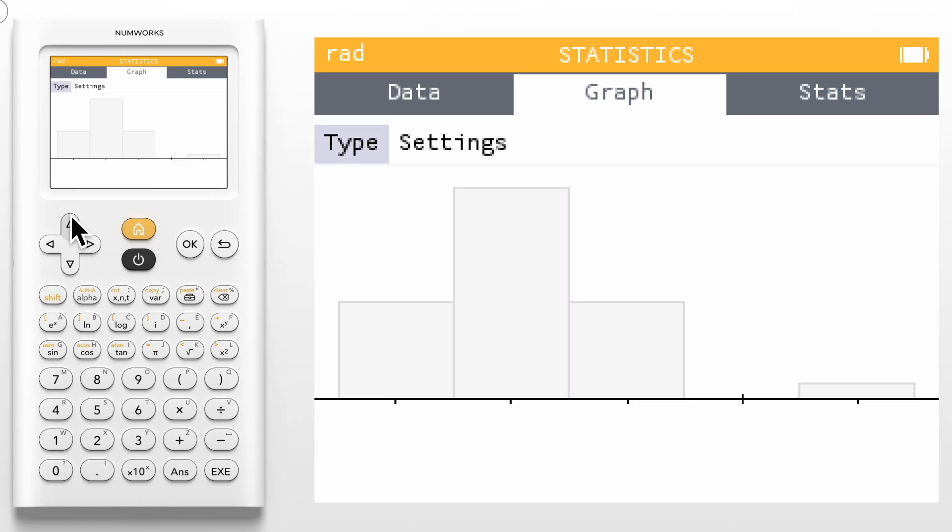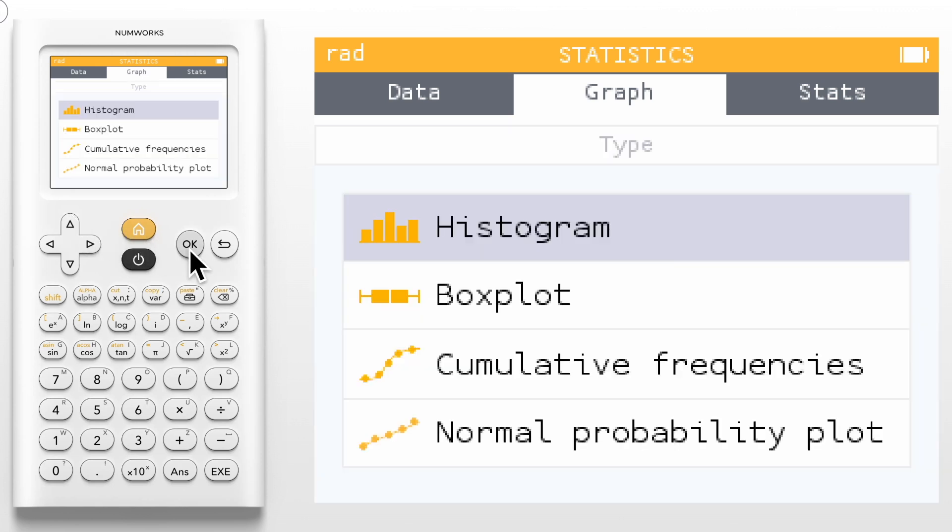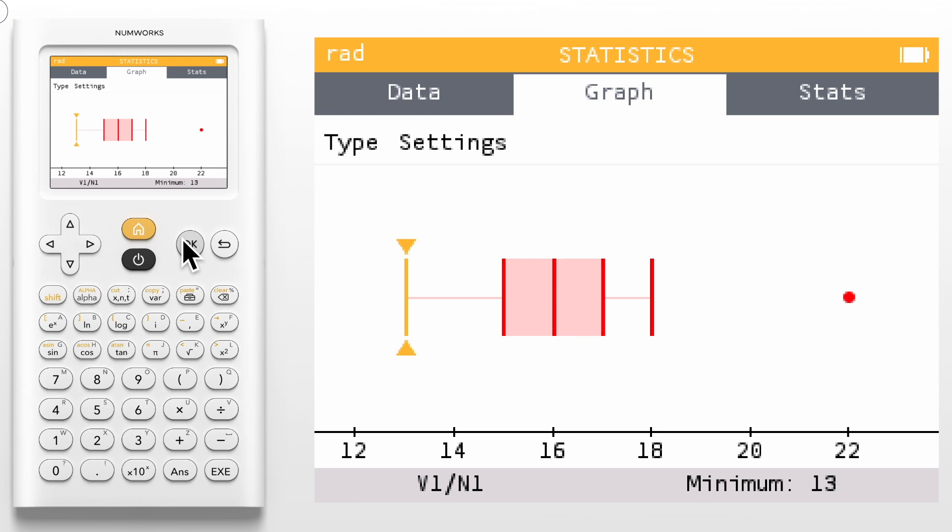Now let's select type to change from a histogram to a box plot. The box plot provides us with the five number summary in the bottom banner. Use the left and right arrow keys to see each value with its name to reinforce vocabulary use. Box plots will also indicate outliers automatically. If you'd like to change this view and not include outliers you can deactivate this in settings.